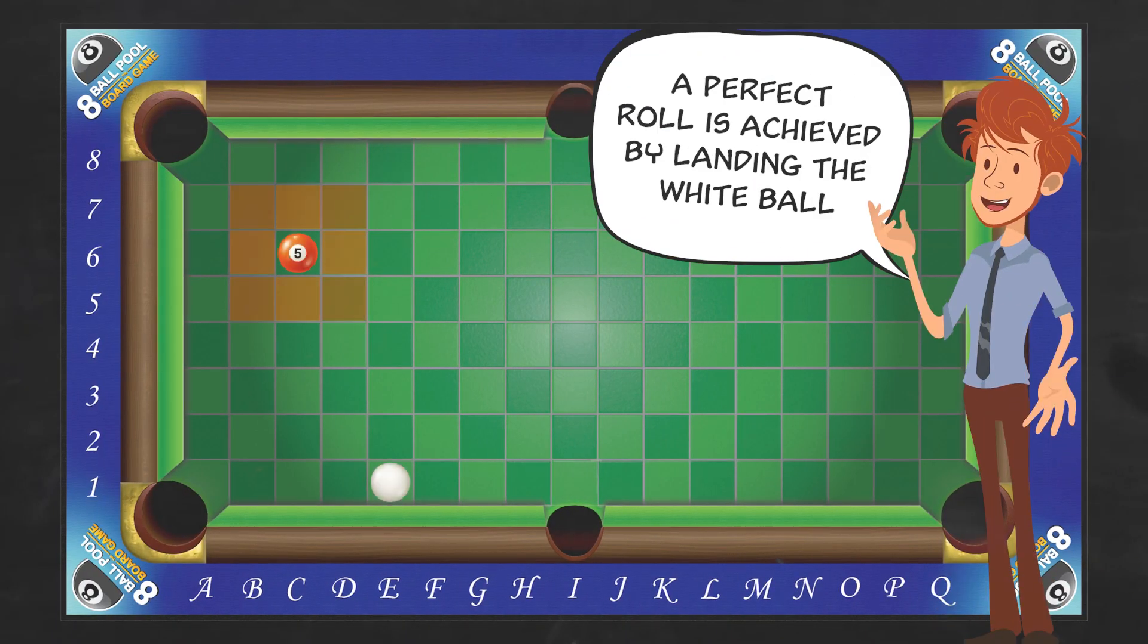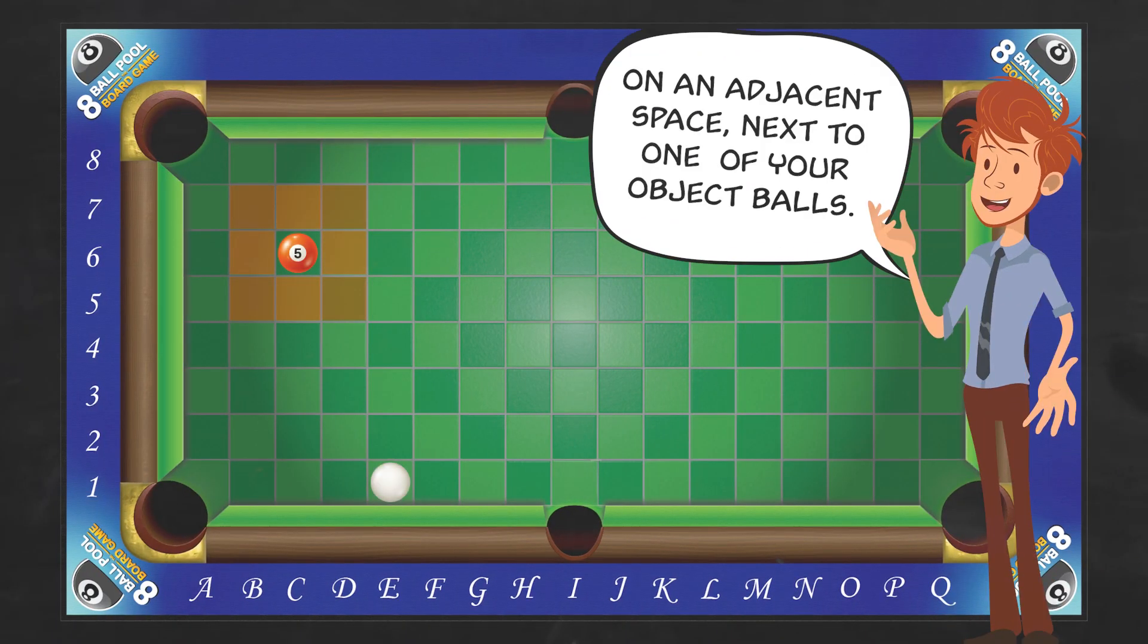A perfect roll is achieved by landing the white ball on an adjacent space next to one of your object balls.